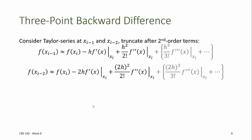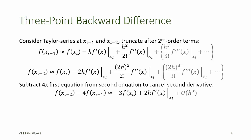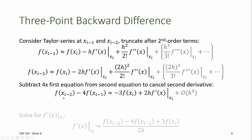The three-point backward difference method requires two Taylor series expansions, both around the point at which we want to find the first derivative. One calculates f at xi minus 1, and the other calculates f at xi minus 2. Similar to the two-point central difference method, we truncate after the second order terms, and then subtract four times the first equation from the second equation to cancel the second derivative terms. This results in an expression relating the first derivative of f to f at xi, xi minus 1, and xi minus 2.